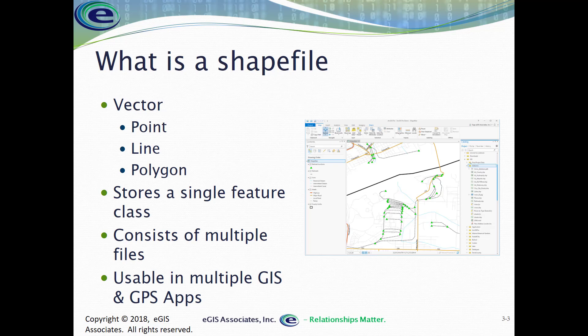Part of the confusion that comes in when people use shapefiles is the fact that they do consist of multiple files — there is more than one file, even though it's called a shapefile. That does lead to a lot of confusion, especially if we're trying to share our data with someone else, like emailing a shapefile. We often don't realize there are several files we need to send at the same time.